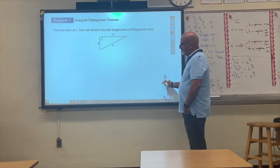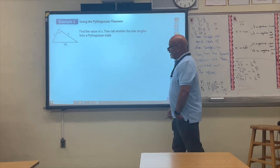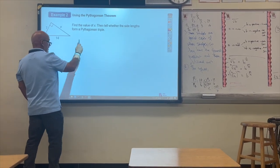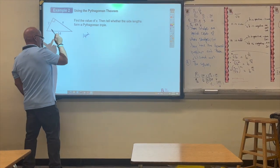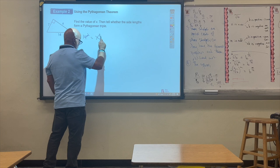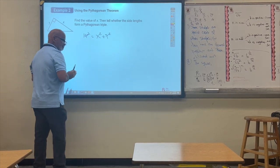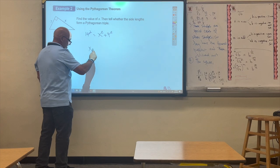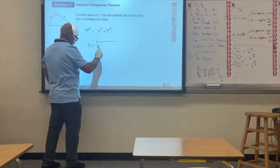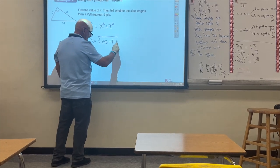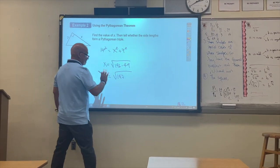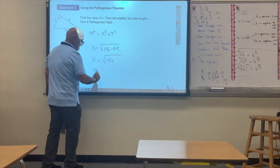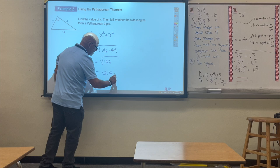In the next example, we need to find the missing side again, but be careful — the missing side is not the hypotenuse. When setting up the Pythagorean theorem, remember the hypotenuse squared equals the sum of the legs squared. To isolate x, we subtract 7 squared from both sides and apply the square root: x equals the square root of 14 squared, which is 196, minus 7 squared, which is 49 — giving the square root of 147, which is approximately 12.4.